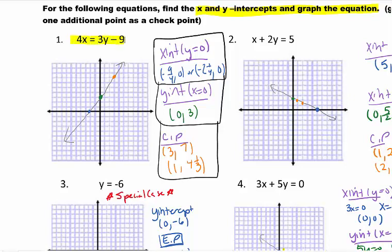For the first problem here, we have 4x equals 3y minus 9. When we plug in for the x-intercept, which means plug in y equals 0, we get the point negative 2 and one-fourth, which is between negative 2 and negative 3. When I plug in x equals 0 for my y-intercept, I get 3y minus 9 equals 0. And when I solve that, I will get 0, 3 for my y-intercept.